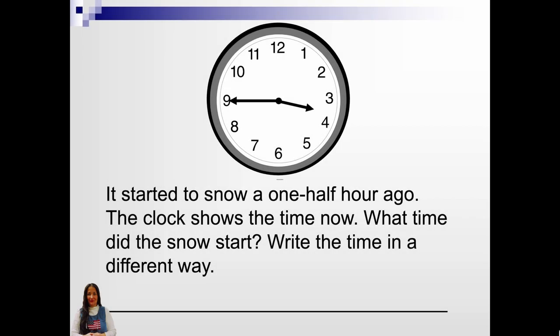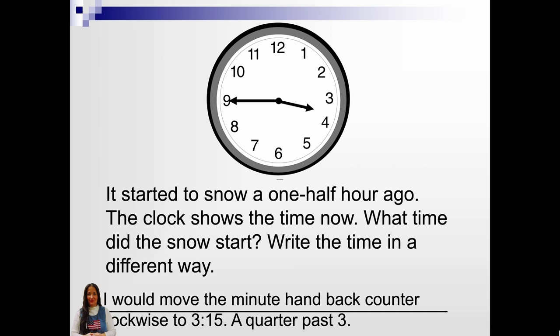It started to snow one half hour ago. The clock shows the time now. What time did the snow start? Write the time in a different way. I would move the minute hand back counter-clockwise to 3:15. A quarter past 3.